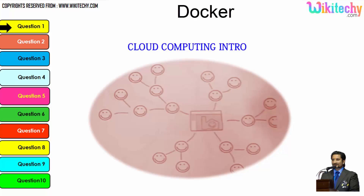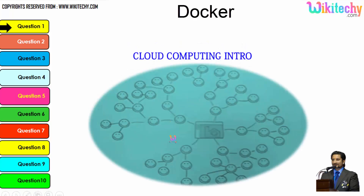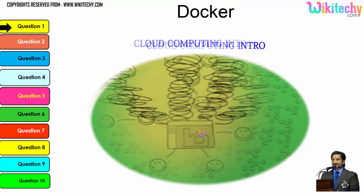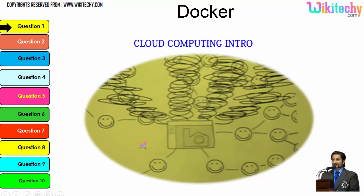Let's talk about the cloud computing intro. Here is a computer connected to a server, and this server is monitoring the computer. Once the network becomes bigger, the monitoring becomes tougher for that server. As more computers are added, the network grows larger and the monitoring system becomes really slow. There's also a possibility that the network crashes or the server couldn't monitor specific networks.